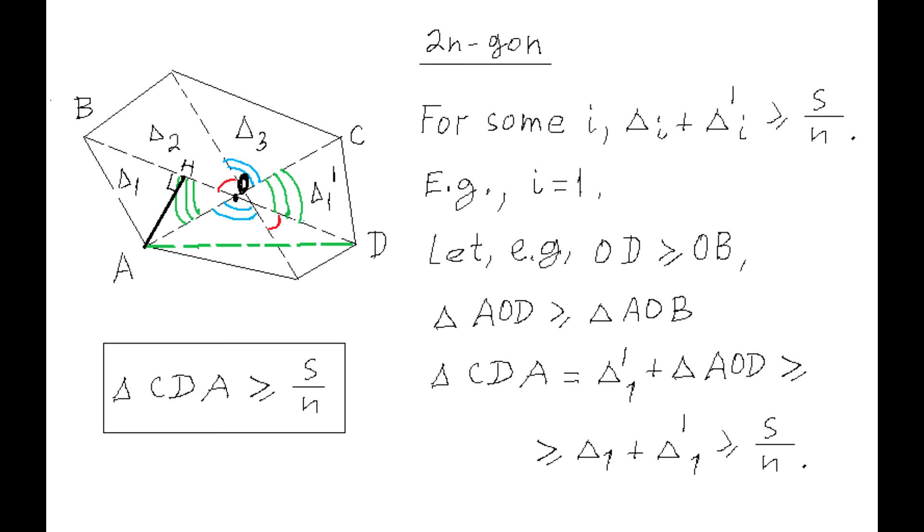It follows from the previous result that, at least for one I, where I is an index of pair from 1 to N, the sum of two triangles I and I' is not less than S divided by N.